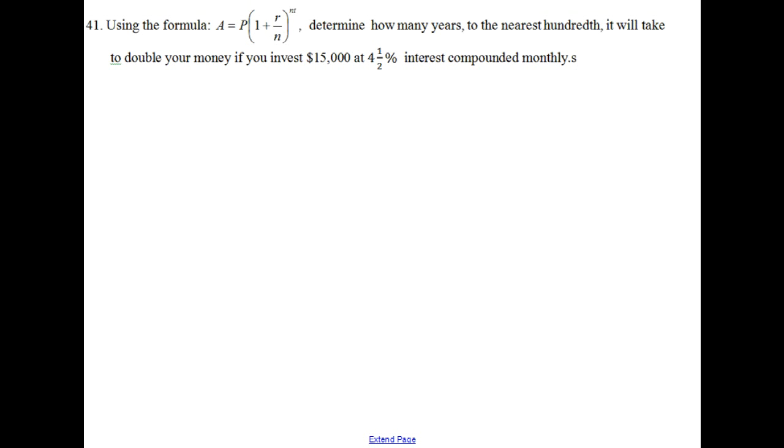The unknown quantity is the time period of the investment because the question here is how many years will it take to double your money. So t is the variable for the unknown quantity, the time period of the investment.